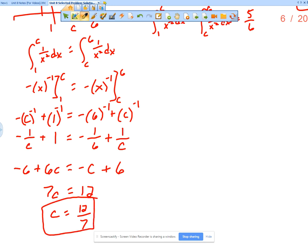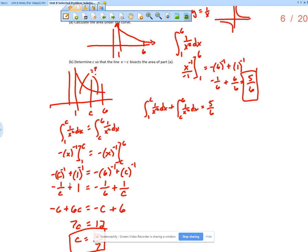Now, you also want to just glance back at the graph and make sure that that makes sense. Here's 1, here's 6. C should be somewhere in between 1 and 6, but think about it closer to 1 than to 6. So 12 sevenths obviously is less than 2, so that would be true.